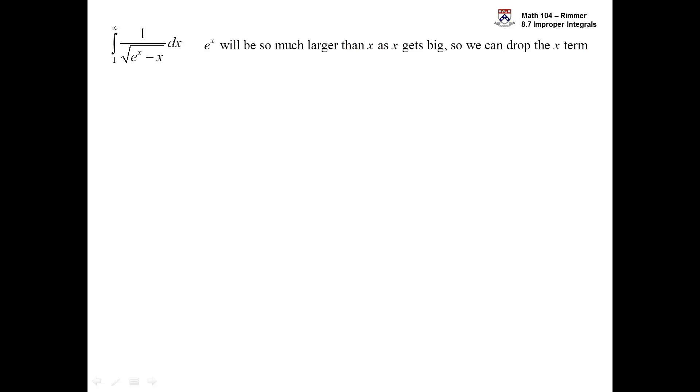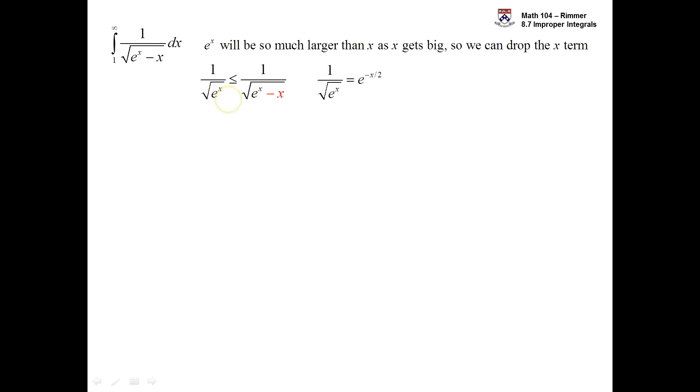Let's see another example: 1 over the root of e to the x minus x. Ask yourself what doesn't matter as x gets big. Like in the previous question, e to the x will dominate the x in the denominator — e to the x is so much larger than x. So we can drop off that x term. But be careful: by dropping off the x term, what we're left with is smaller, because we have a smaller denominator, which means a bigger value. We need to make sure we can integrate what we end up with.